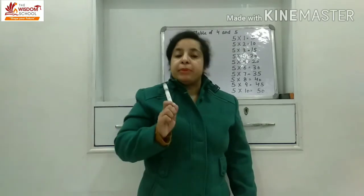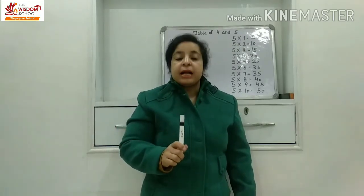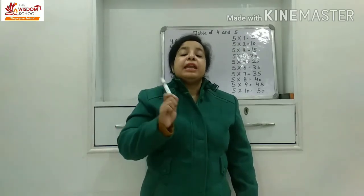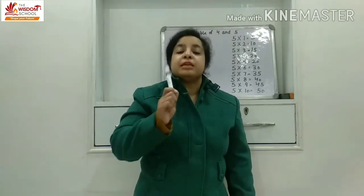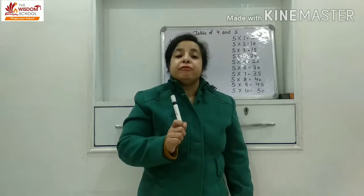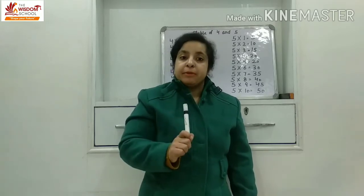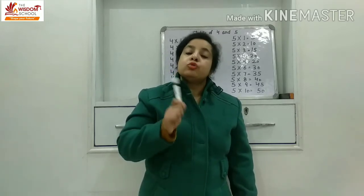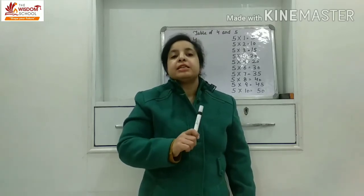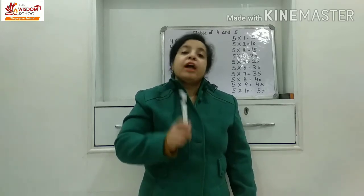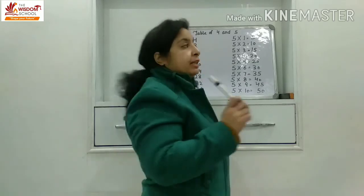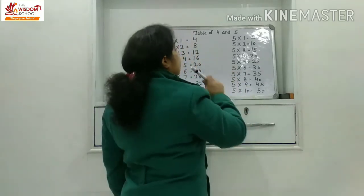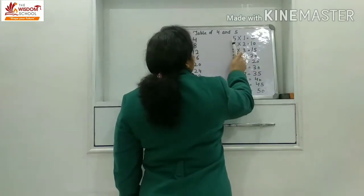Abhi hamne revision complete ki. Now come to the next table — table of five. Aapki class mein only two to five tak hi tables hain. Five ka table bahut easy hai, bita. Dhyan se dekhna. Speak with me.